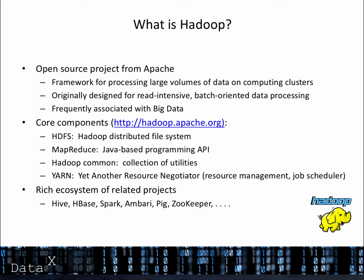Let's spend a minute talking about the core components of Hadoop. These include a distributed file system, the MapReduce programming framework, a collection of utilities, and YARN, which provides job scheduling and resource management capabilities. A rich ecosystem of related open-source projects has also emerged for Hadoop, including Hive, HBase, Ambari, and many more.